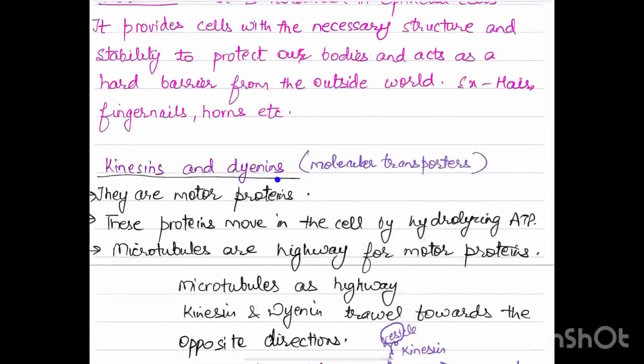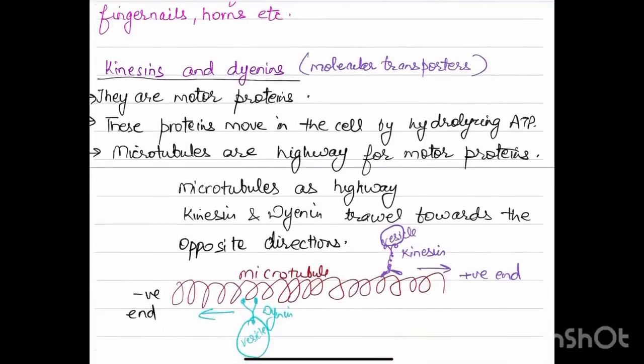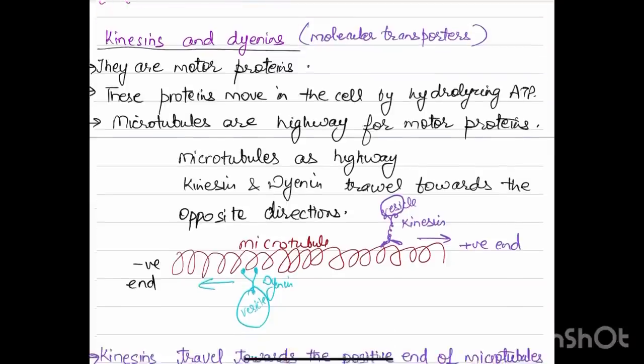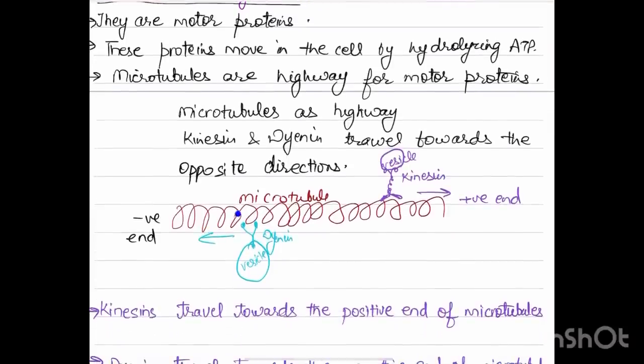Kinesins and dyneins are also known as molecular transporters. They are motor proteins that move in the cell by hydrolyzing ATP. Microtubules are highways for motor proteins. Kinesins travel towards the positive end of microtubule and dyneins travel towards the negative end of microtubule.